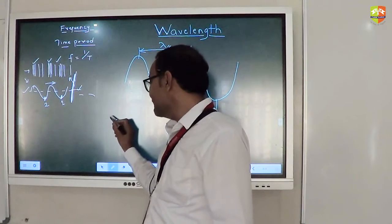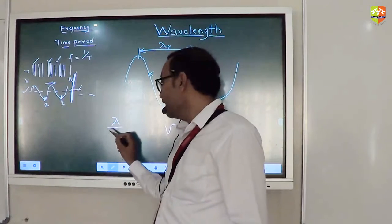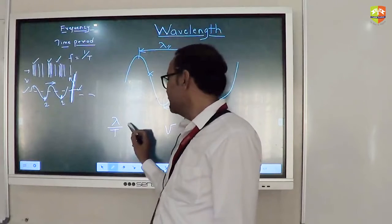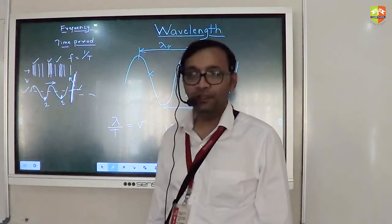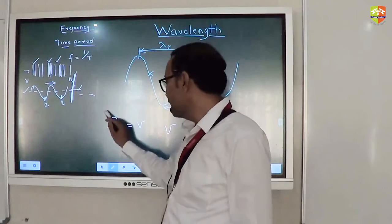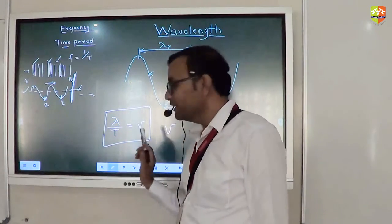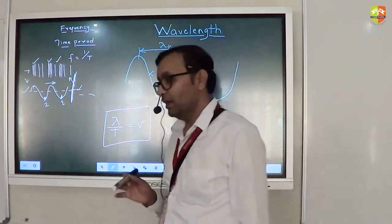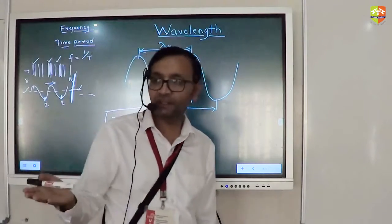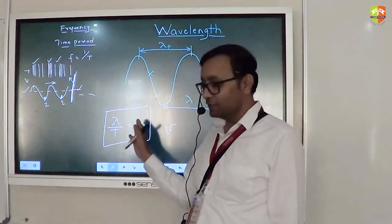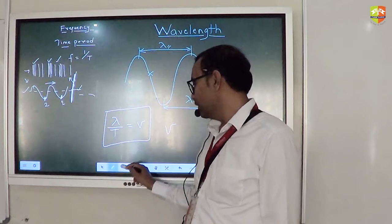So one wavelength is the distance. Distance is one wavelength divided by time taken is time period. This should be equal to speed V. So this relation makes sense, right? This equation is one of the basic equations like time period, and it's going to be used in various numericals. So you need to get comfortable with this.